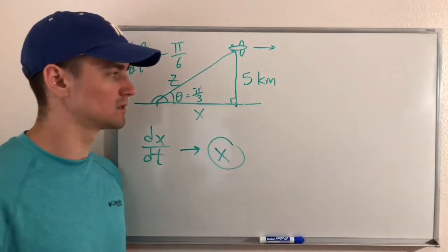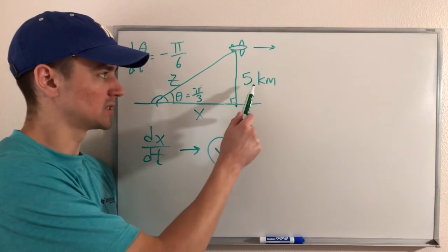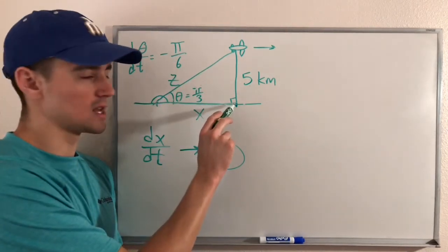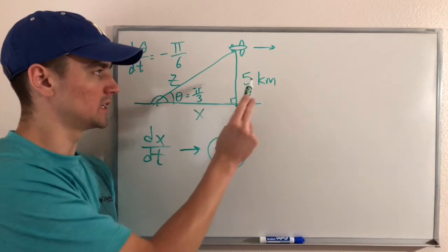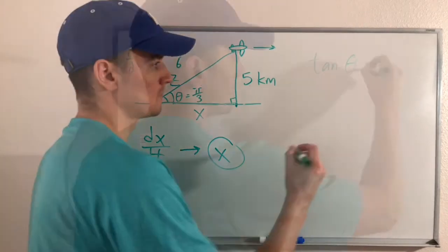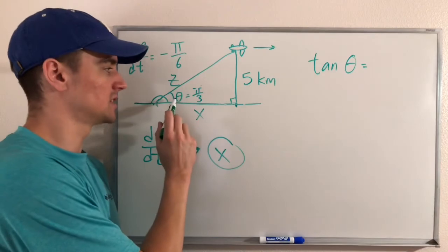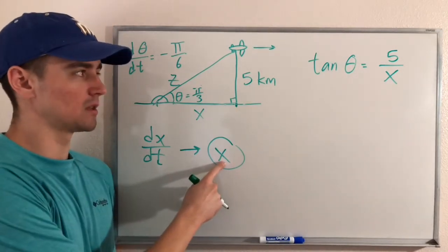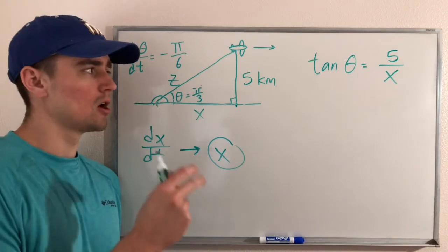Sine, cosine, and tangent each relate one angle of a right triangle to two of its sides. With theta as our reference angle, the five-kilometer side is opposite and X is adjacent, and the hypotenuse is opposite the 90-degree angle. That's exactly what tangent does: tangent of an angle equals opposite over adjacent. So tangent of theta equals 5 over X. This equation contains everything we know and the variable we need.